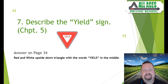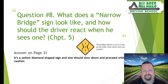Question number seven: describe the yield sign. Be careful — this says describe, meaning what does the sign look like, not what it means. The yield sign is a red and white upside-down triangle with the word 'yield' in the middle.